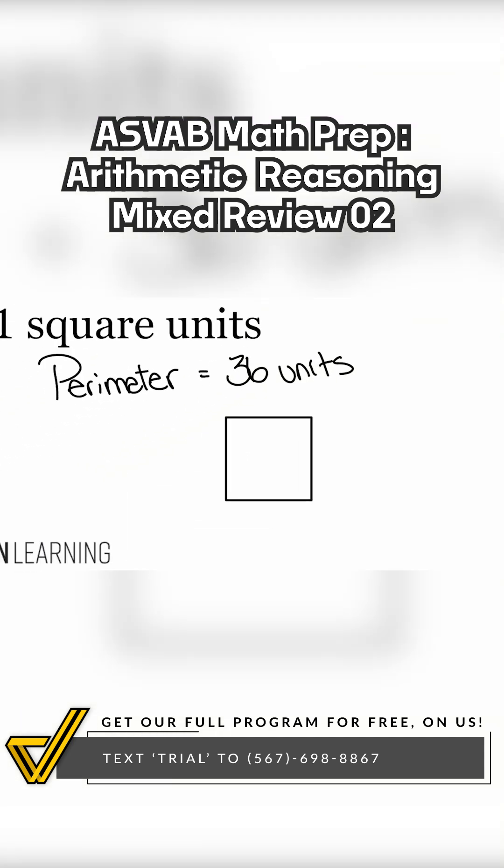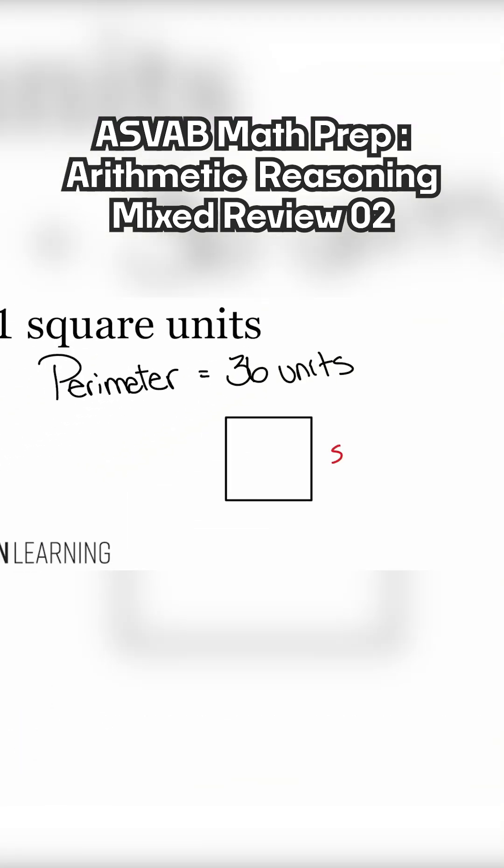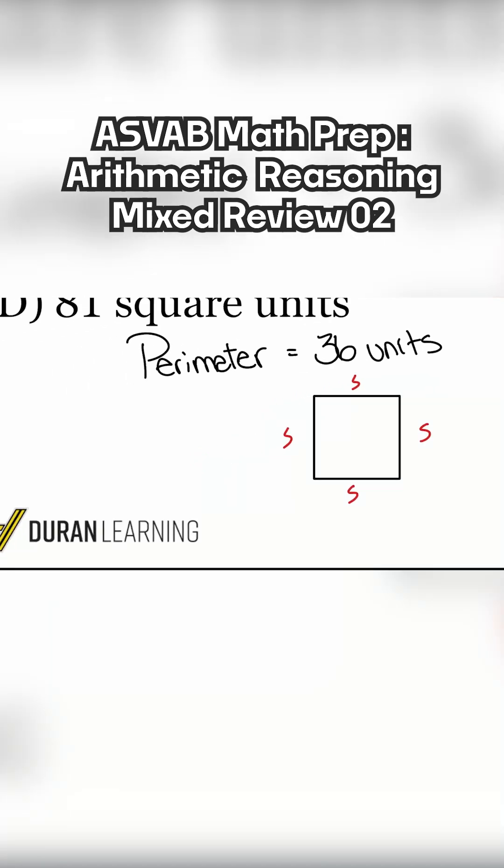So let me go ahead and just draw out a square so we can see it nice and easy here. Remember that a square contains four equal sides. And so the formula says, perimeter equals four times the side. And so when we think about what the perimeter actually is, 36 units, let me plug that in right here.